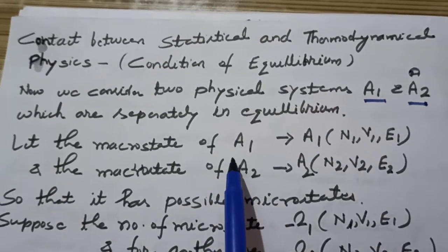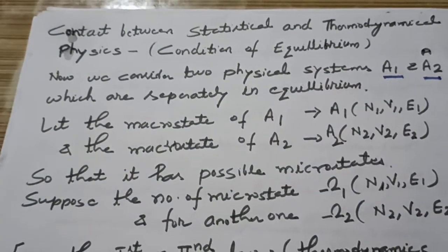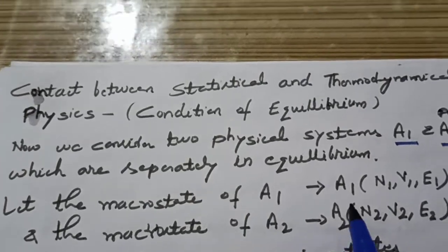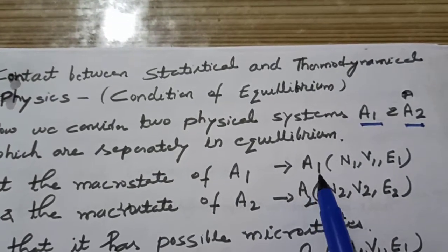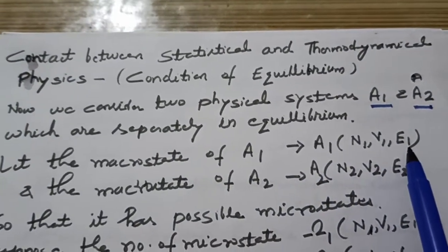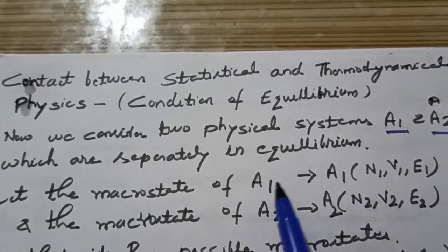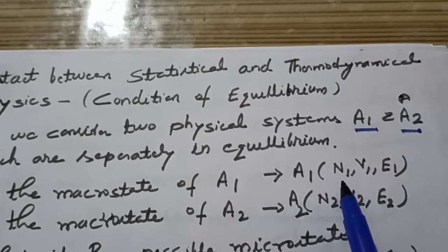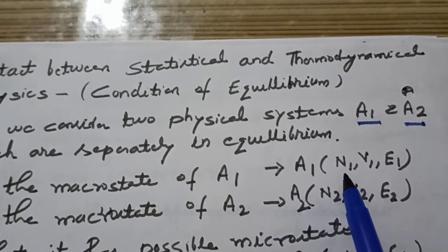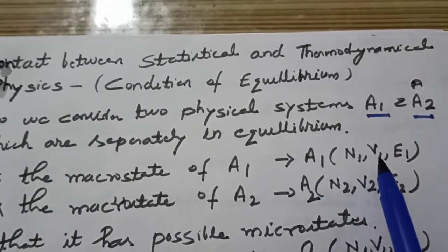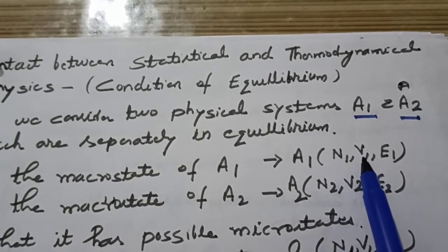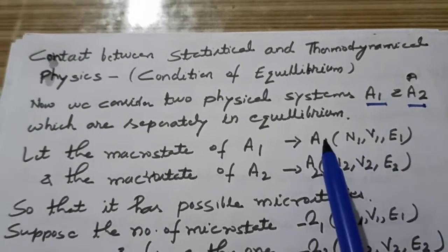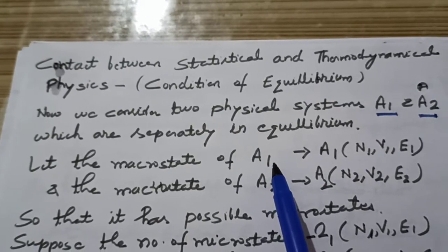Let the macro state of A1 be assigned by N1, V1, E1. This is the macro state of A1. Here N1 corresponds to the number of particles in A1, V1 corresponds to volume, and E1 is the energy corresponding to system A1.